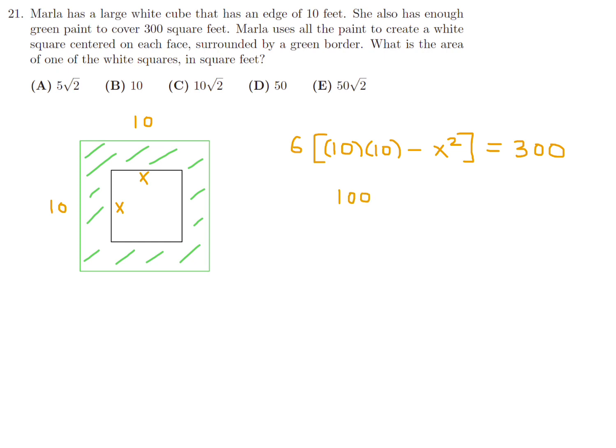So, this is the algebraic equation I have to solve. So, this is 100 minus x squared. And divide through by six and you get 50. Put the x squared on the other side and you get 100 minus 50, which is 50. What is the area of one of the white squares in feet? Well, the area of one of the white squares in feet is x squared. And that's what we just figured out. So, the answer to number 21 is 50, which is D.